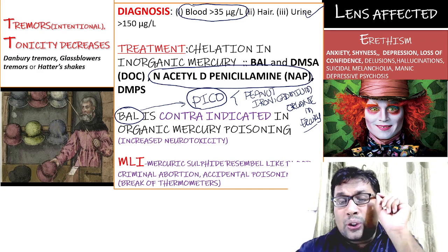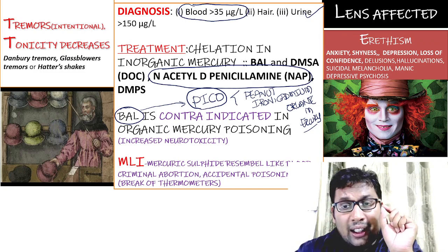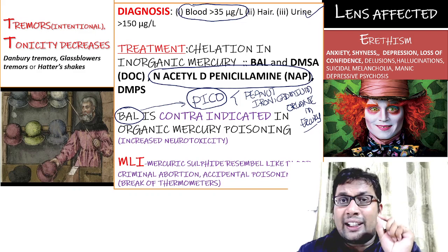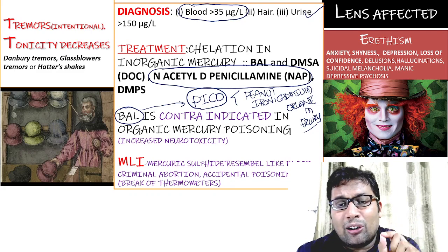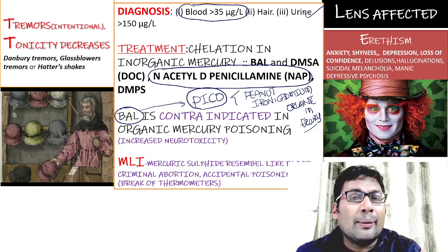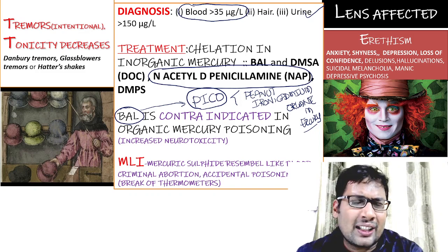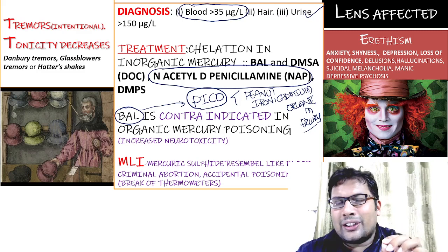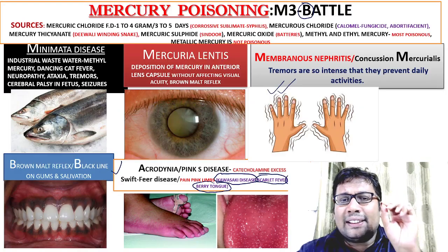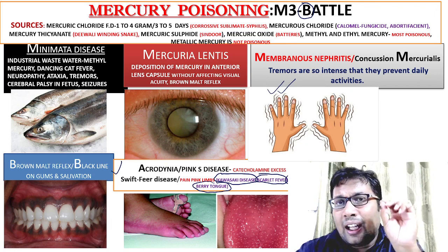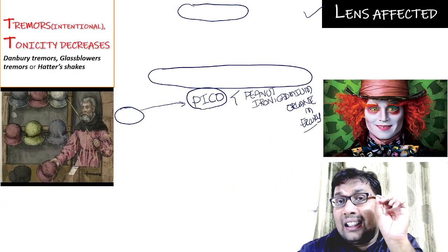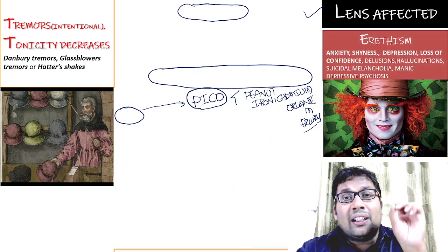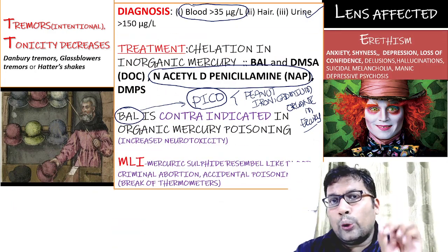For medico-legal importance: mercury sulfide resembles blood stain and is used in criminal abortion. Accidental poisoning can occur, while suicide and homicide are very rare. Accidental poisoning is seen when a thermometer breaks in the mouth or a BP apparatus breaks. To summarize, the mnemonic is M3 Battle: M for Minamata disease, mercuria lentis, membranous nephritis, concussion mercurialis; B for blue-black line; A for acrodynia; T for tremors and decreased tonicity; L for lens affected; E for erythrism. Drug of choice is BAL and DMSA. Thank you. Happy reading.